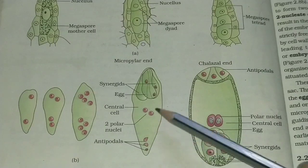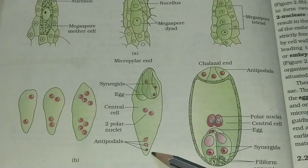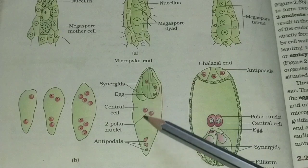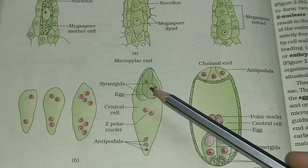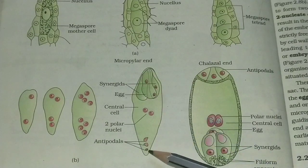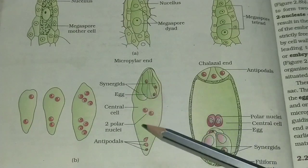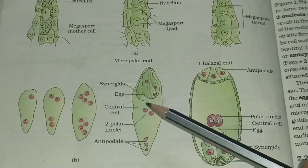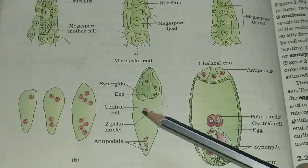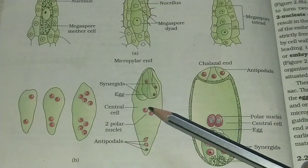This is the immature embryo sac. The immature embryo sac has 8 nuclei and 8 cells. So, the immature embryo sac has an 8-nucleus and 8-cell structure.